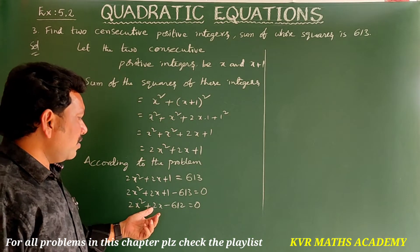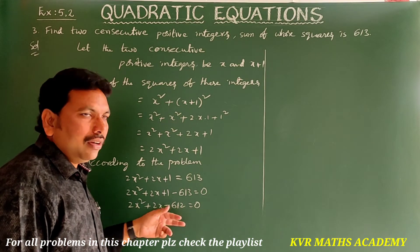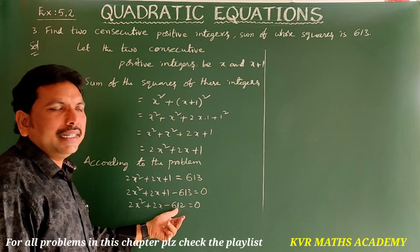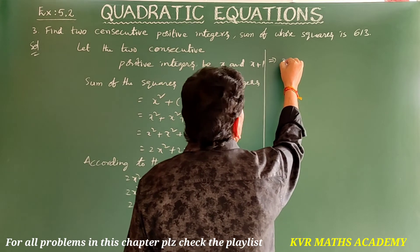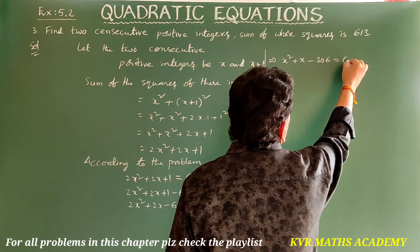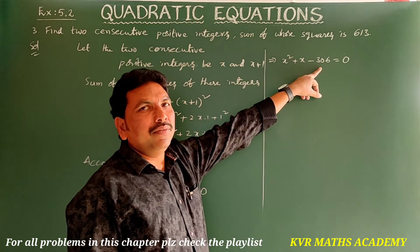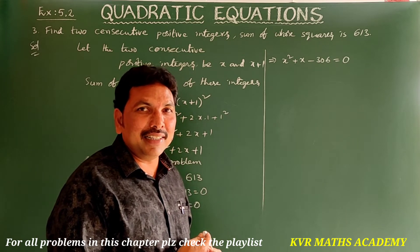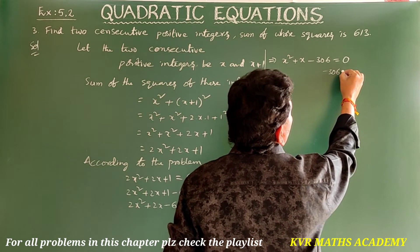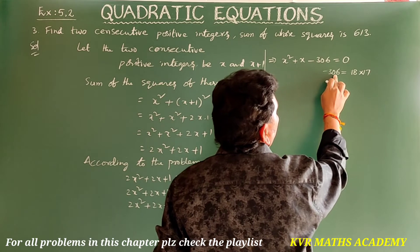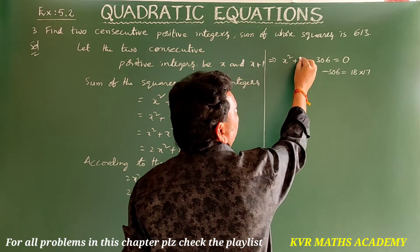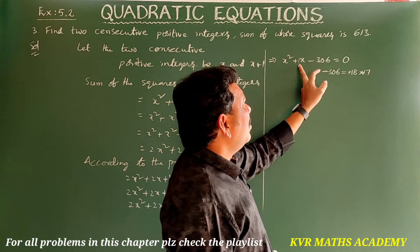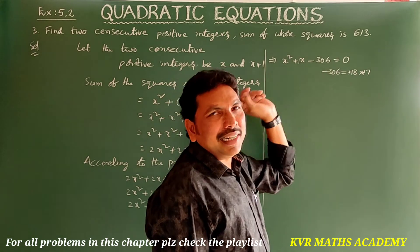Since all coefficients are even, divide both sides by 2: x² plus x minus 306 equals 0. For 306, we need factors whose difference gives 1. 18 times 17 is 306, and 18 minus 17 is 1. So we write plus 18 and minus 17, giving x² plus 18x minus 17x minus 306 equals 0.